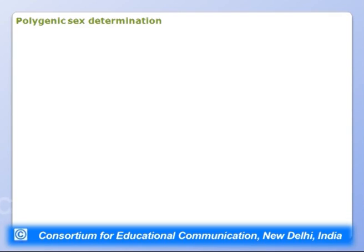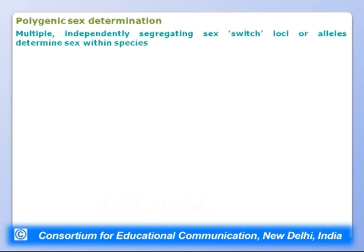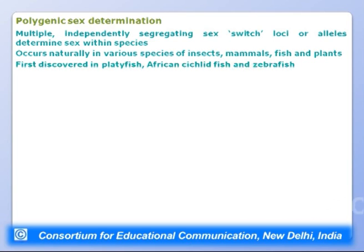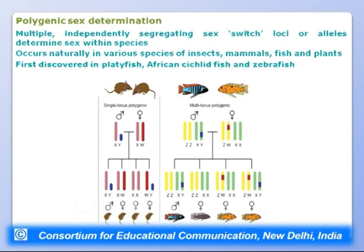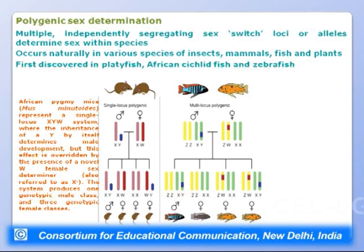There are other genic sex determination systems. Polygenic sex determination involves multiple independently segregating sex-determining loci or alleles. Found in various insects, mammals, fish, and plants, it was first discovered in platyfish, African cichlid fish, and zebrafish. In African pygmy mice, a single-locus XYW system exists where Y alone determines male development, but this effect is overridden by a novel W female sex-determiner, producing one genotypic male class and three genotypic female classes.